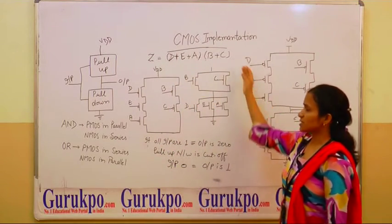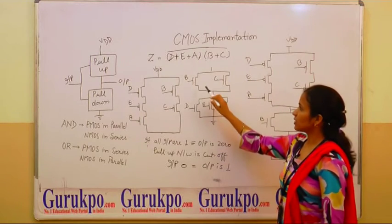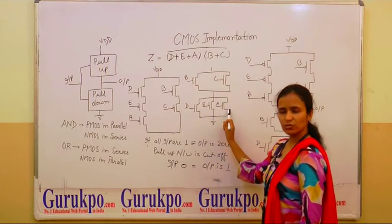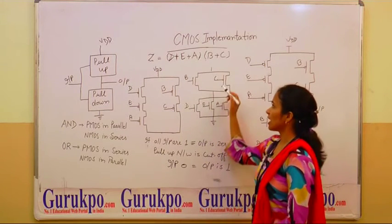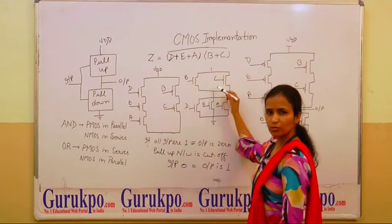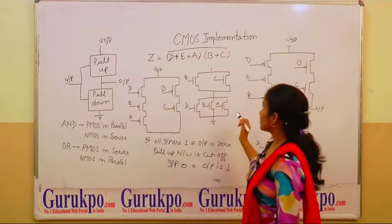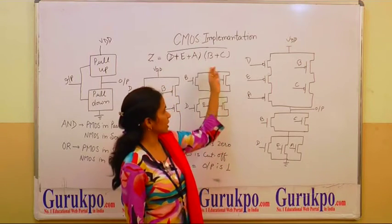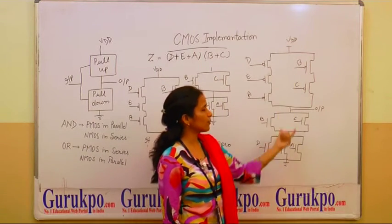Similarly, to construct pull-down network, there is an NMOS transistor which are connected in parallel form and also these are connected in parallel form. Lastly, we connect these in series form. This is a full network of the CMOS implementation of this equation. Here, pull-up network and pull-down network.